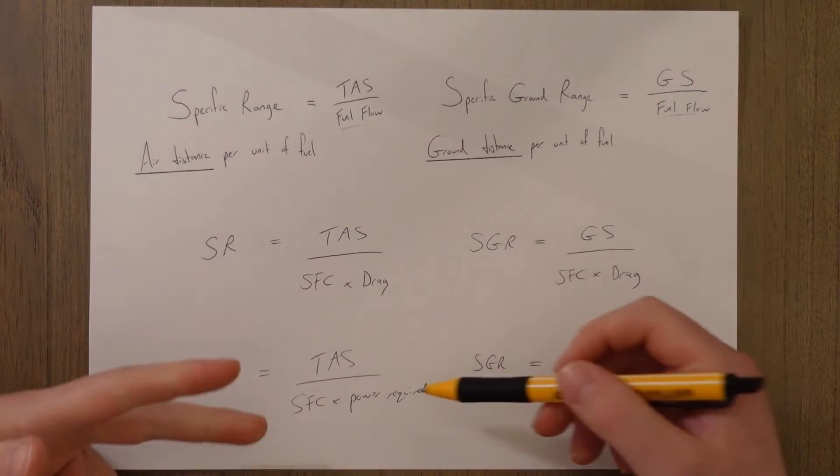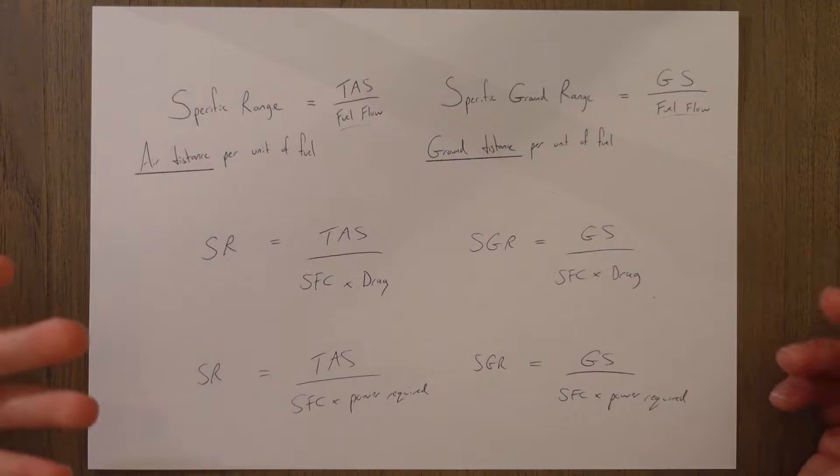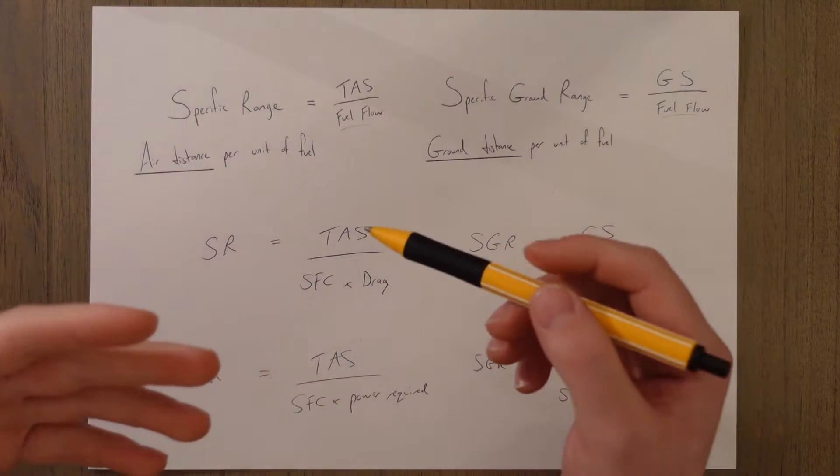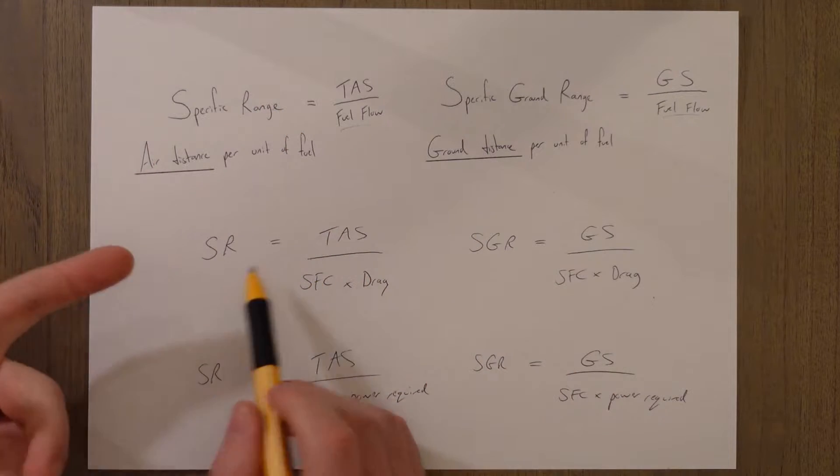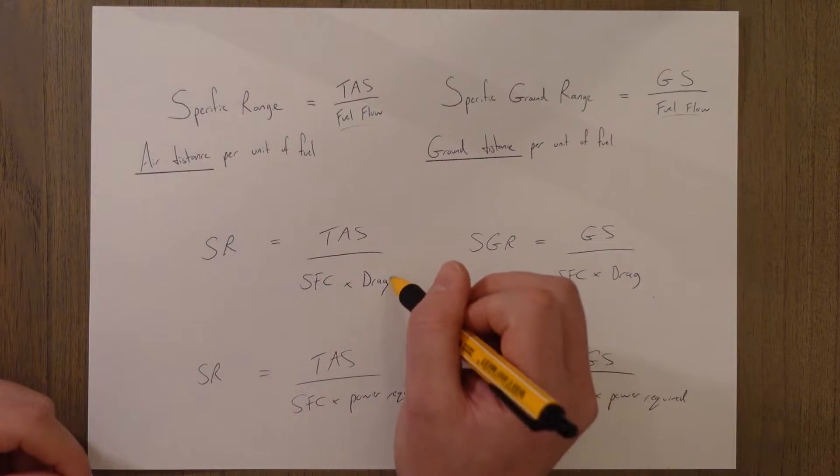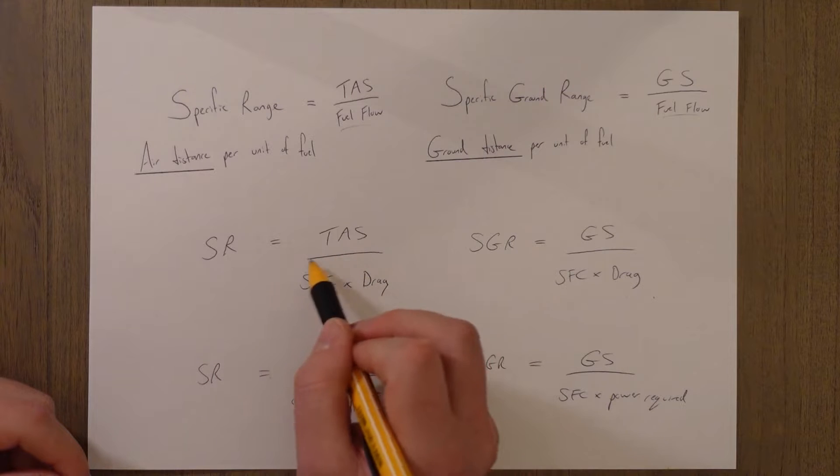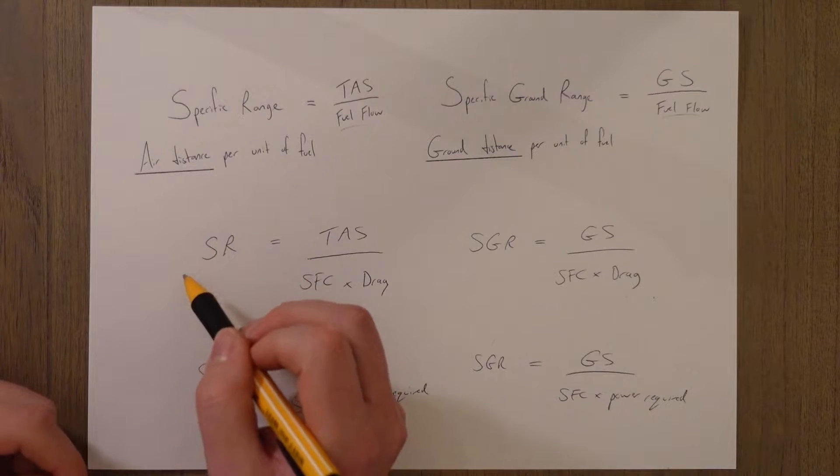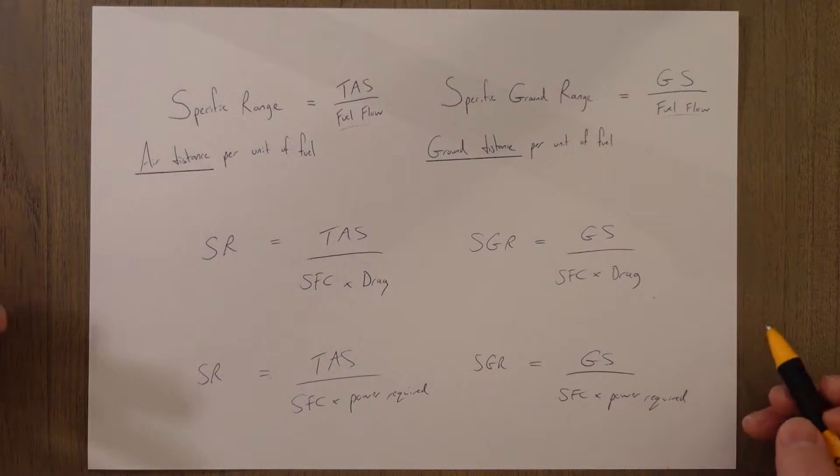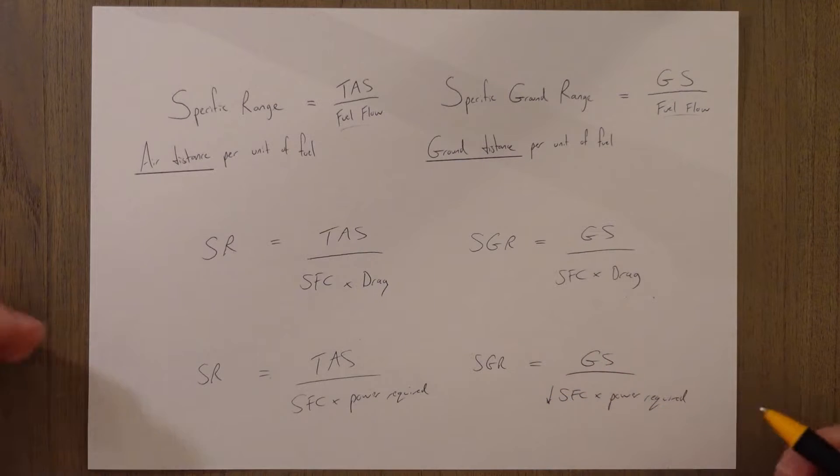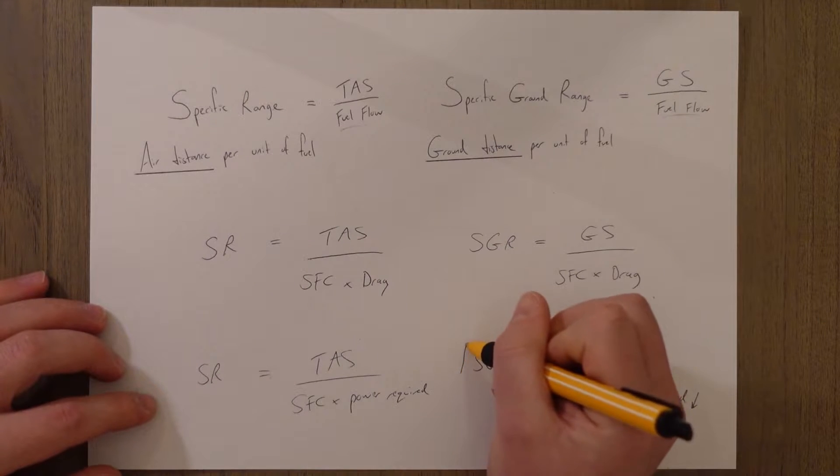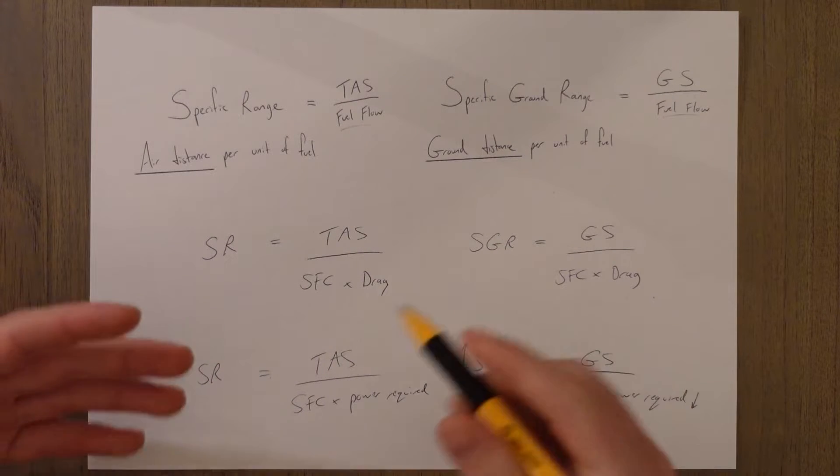So why have we substituted in those values instead of fuel flow basically? Well, it basically allows us to see a bit more clearly the factors that affect fuel flow and our specific range. So if we look at this one, for example, we know that if the specific fuel consumption is high and the drag is high, that means that we're going to be dividing by a larger number, and that means our specific range is going to go down. If we take the specific ground range of the propeller, for instance, if we have a low specific fuel consumption and a low amount of power required, we're dividing by a small number, which means our ground range is going to be high. It's just an easy way to analyze.